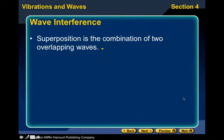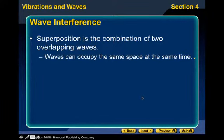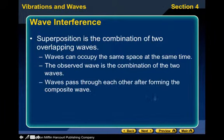Okay, superposition is the combination of two overlapping waves. So they overlap each other and you can have, they can occupy the same space at the same time. And the observed wave is then the combination of the two waves. So you have the two waves adding together. Are they both from the same wave then? No, they're coming from the opposite directions. Okay.